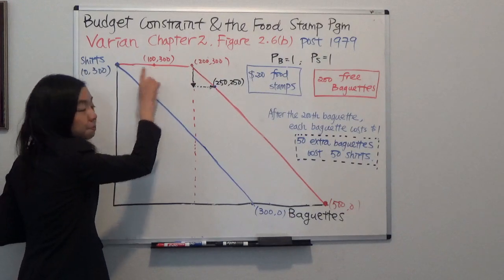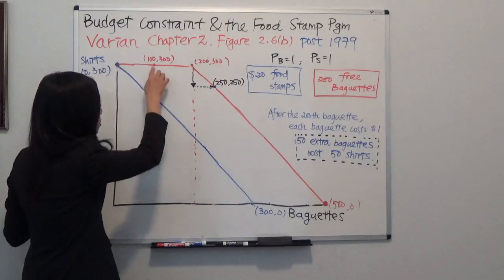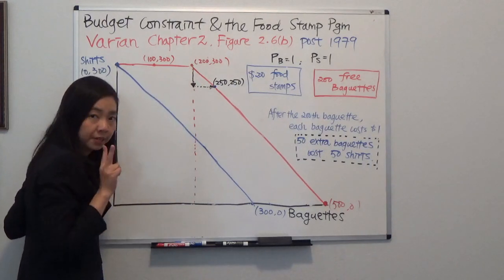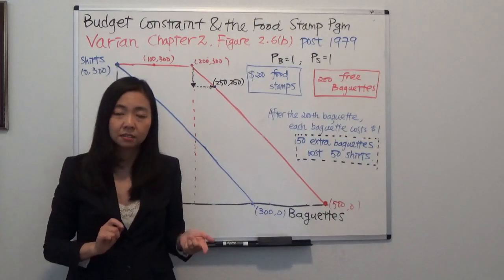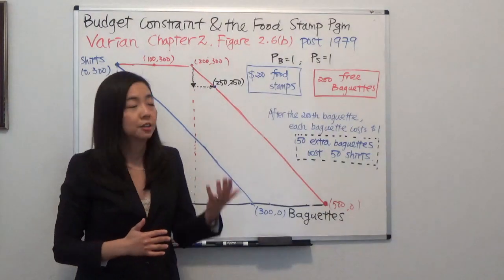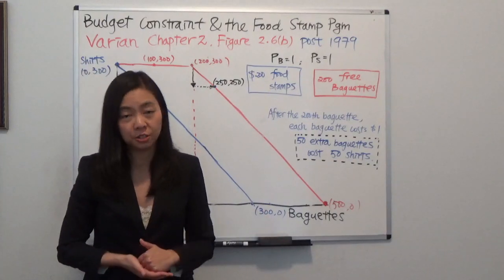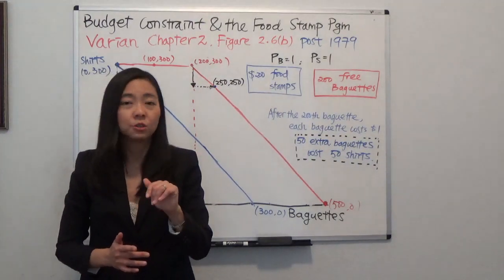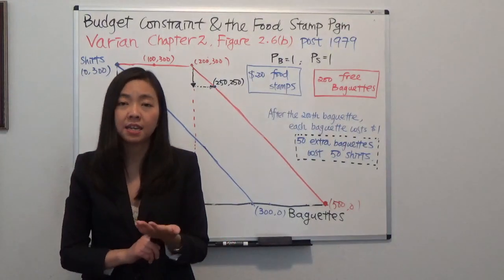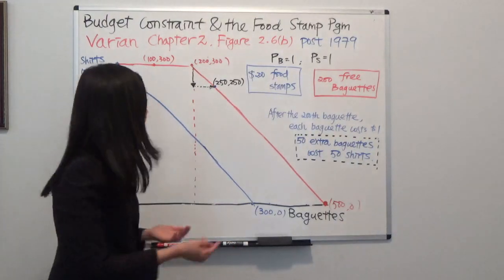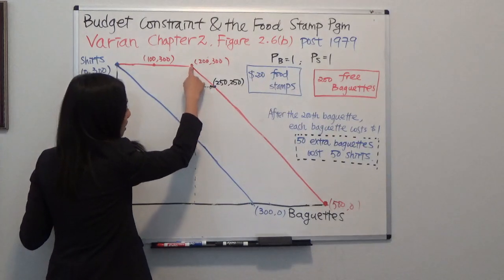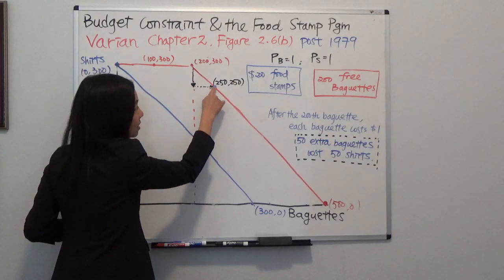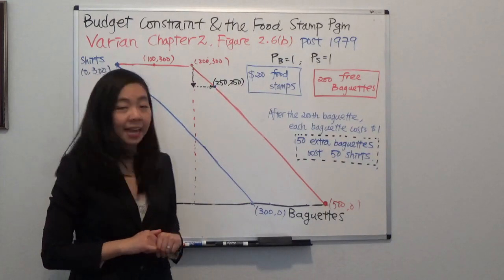In fact, you can consume just 300 t-shirts and increase the number of baguettes up to the 200th baguette, because the government only gives you 200 free baguettes. After the 200th free baguette, if you want to consume more baguettes, you will actually have to buy them. So if you're buying more baguettes, that means you have to consume fewer t-shirts. Suppose after the 200th baguette you want 50 more — you'll have to use $50 to buy baguettes, meaning you can't spend those $50 on t-shirts. So you'll be consuming 250 baguettes and 250 t-shirts.